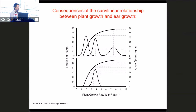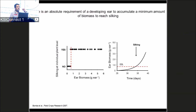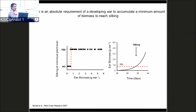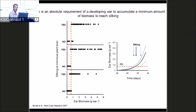We can also relate the qualitative shift in silking to a specific ear biomass threshold. Plotting ear biomass over time, we've discovered there is a particular ear biomass at which the ear reaches silking — the ear is growing within the husk and we can relate a specific biomass to that moment. Across canopies growing at different rates for the same genotype, this threshold is more or less constant.